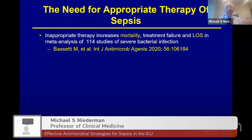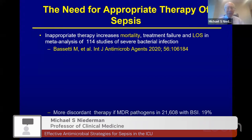It is extremely important — and we've known this for many years — how critical it is to get appropriate and rapid therapy in patients with sepsis. Inappropriate therapy increases mortality, treatment failure, and length of stay. In a meta-analysis of 114 studies, mortality was particularly increased with delays in therapy in severe bacterial infection. Delays and discordant therapy were much more likely with multidrug-resistant pathogens; if we don't account for them in initial empiric therapy, we will have a delay in appropriate therapy, which is associated with increased mortality.